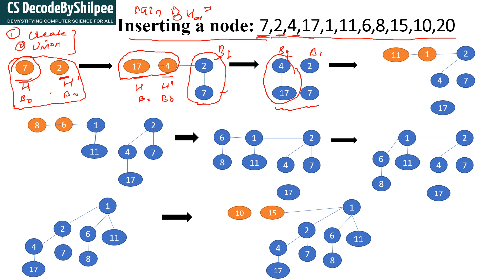Now we can see there are still 2 binomial trees having the same degree, so we perform another union operation. We check the root values of both trees — whichever root has the lesser value becomes the new root, and the other becomes its leftmost child. Here 2 is the root, 4 becomes the leftmost child of 2, and 17 is the leftmost child of 4. After merging, the order is now B2.